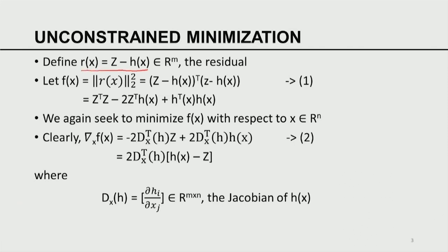The residual is Z minus H of X. Since Z and X are vectors, you can think of the residual as a vector in Rm. We can concoct a function F of X which is the square of the norm of the residual: Z minus H(X) transpose times Z minus H(X). Expanding and simplifying, you get Z transpose Z minus 2 times Z transpose H(X) plus H(X) transpose H(X) — a scalar function of the vector X.